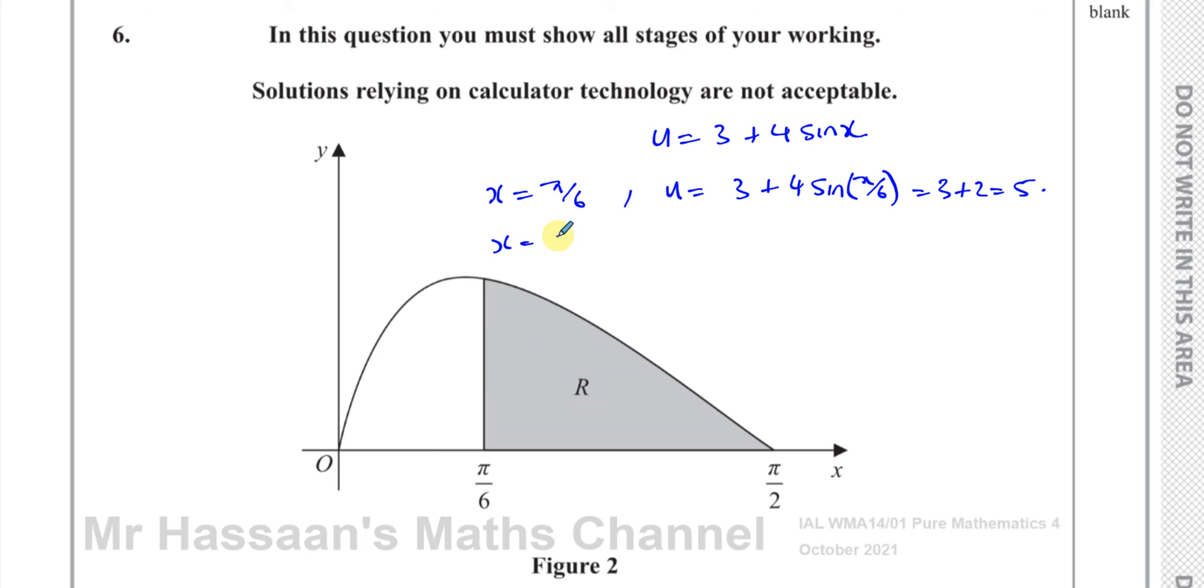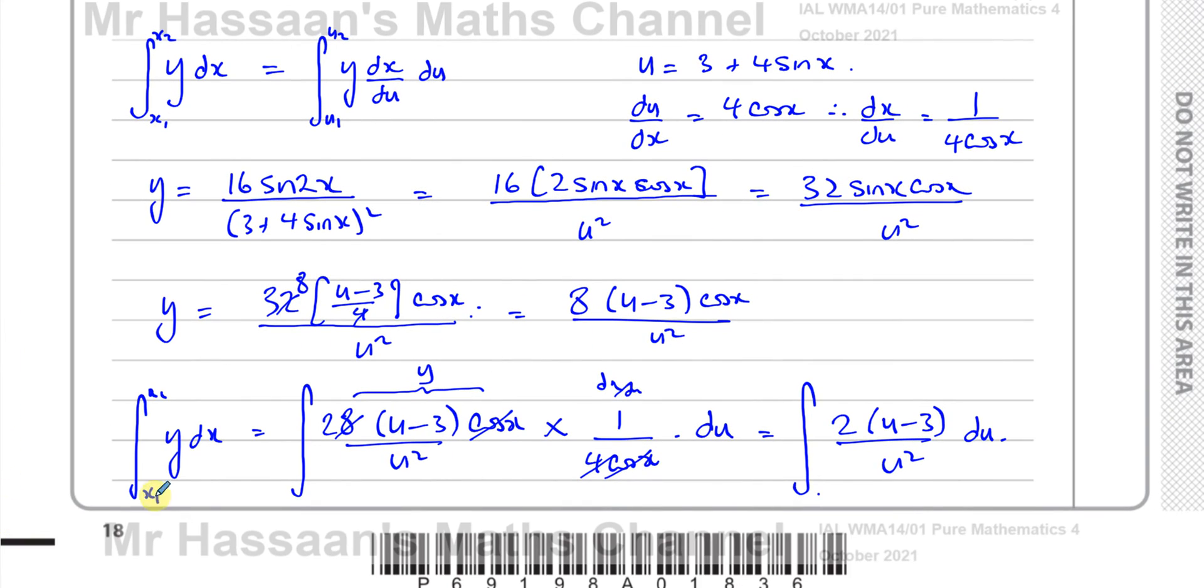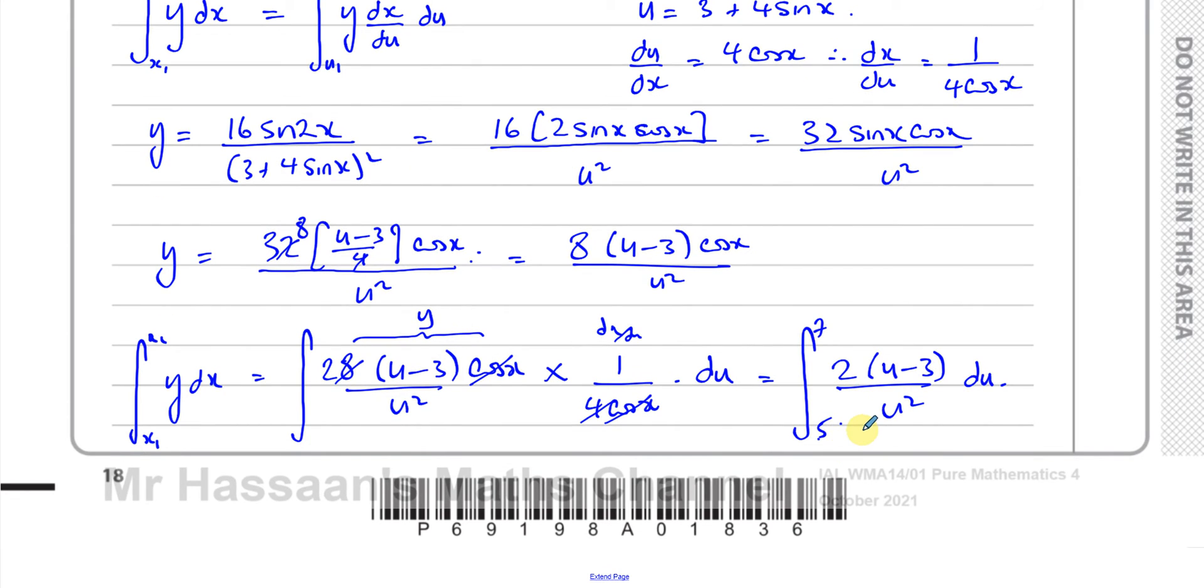And when x = π/2, then u = 3 + 4sin(π/2). Now sin(π/2) is 1. So it's 3 + 4, which is 3 + 4, which equals 7. So the limits are 5 and 7. So I know that my limits are here 7 and 5. So this is what I have to integrate. I'm going to take this to the next page.